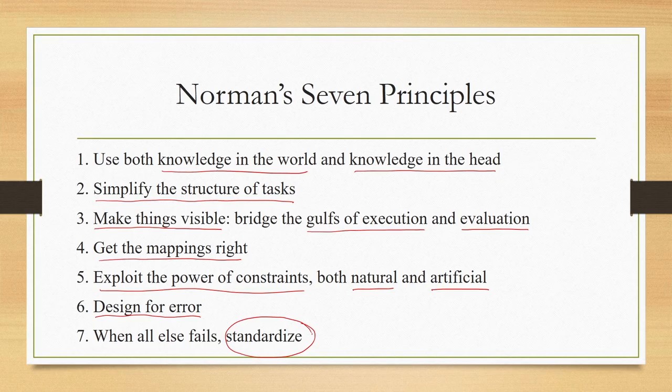The sixth principle talks about designing for errors: if during interaction an error happens, the design should support error handling — we should design knowing that errors will happen. The seventh principle is that if, in spite of best efforts, designs are not behaving as expected, we can standardize all interactions and interface elements so that it is enforced on everyone. Flexibility in use of and interaction with the interface is reduced through standardization so that the expected outcome is achieved. These 7 principles can serve as a starting point for interface design.